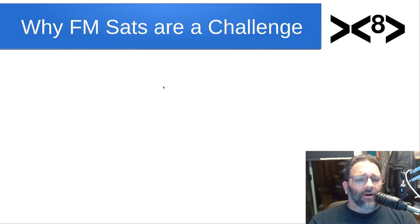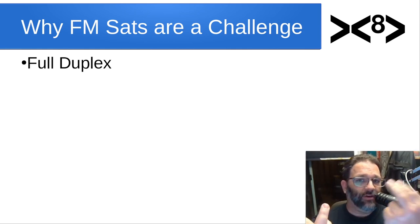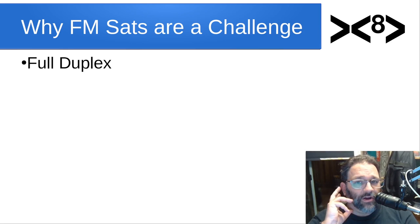So why are operating FM satellites a challenge? What is the problem we're trying to solve here? When you operate an FM satellite, you often want to be able to talk to and hear from the satellite at the same time. You need to operate at full duplex. You're going to be transmitting on VHF and listening on UHF or the other way around, depending on which satellite. And there are a lot of radios that do that now. Most mobile rigs will do full duplex crossband. But nobody makes an HT that will do full duplex operation anymore. They don't exist.